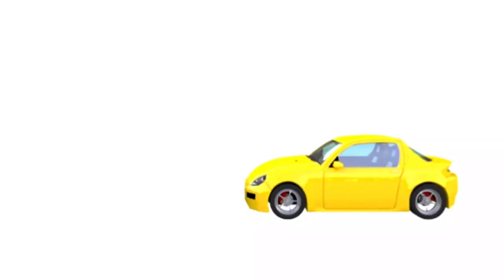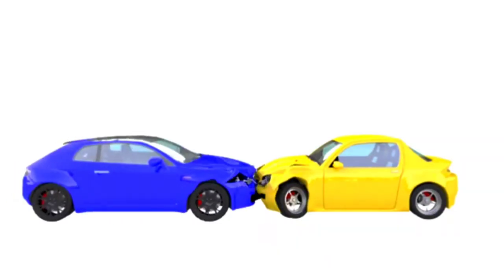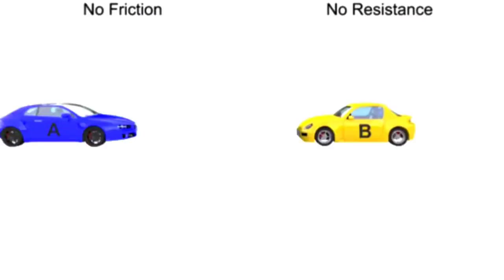A clear example of an inelastic collision is a car crash. In order to understand the conservation of momentum in this example, we'll imagine a car crash taking place in a world where road friction and air resistance have no bearing on the system. Let's take two cars, A and B, with equal mass.